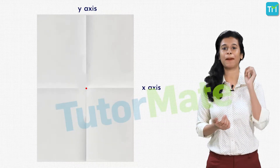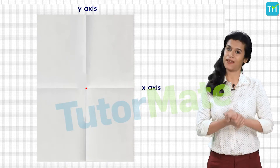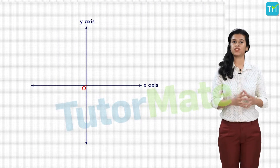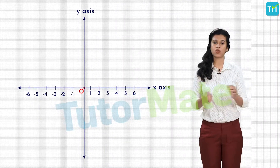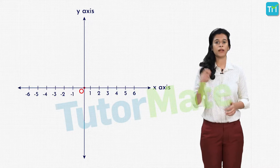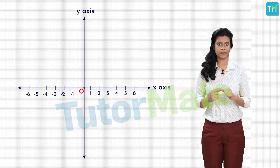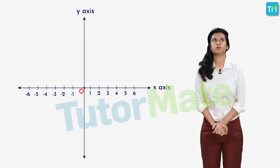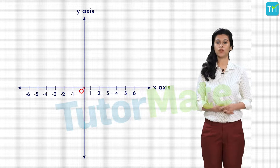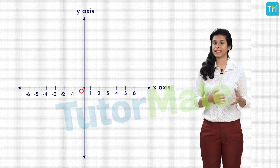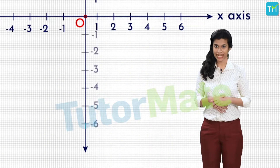You remember how the origin on a number line represents 0? All values to its right are positive while all values to its left are negative. Similarly, when we consider O as the origin, its coordinates will be at (0, 0), and we represent positive and negative values on either side of both axes at equal distances. On the x-axis, numbers to the right of O are positive and to the left are negative. On the y-axis, numbers above the x-axis are positive and those below are negative.